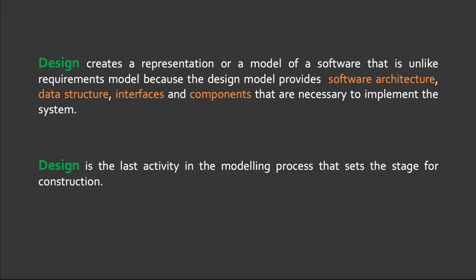The software engineer follows the design created for the software. The design is based on the analysis models that were created during the modeling phase. This goes to say that the design of the software is still anchored on the user requirements. The design creates a representation or a model of software that — unlike the requirements model — provides software architecture, data structure, the interfaces, and also the components that are necessary to implement the system.